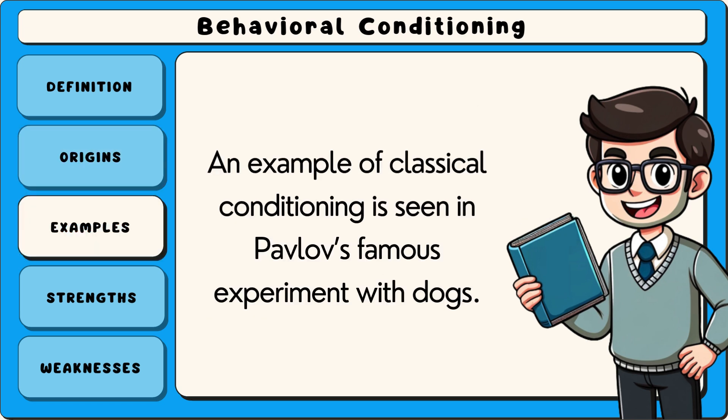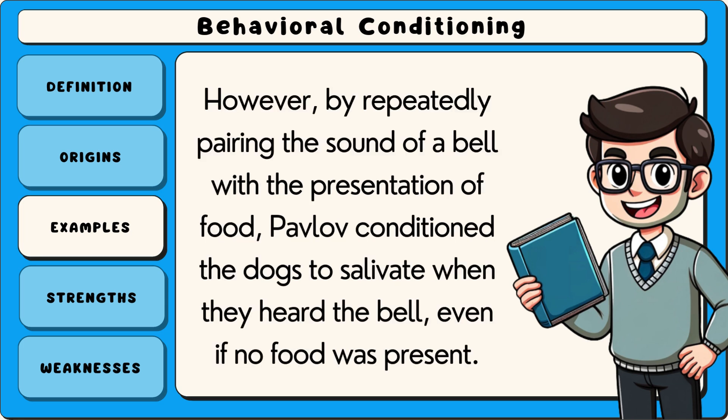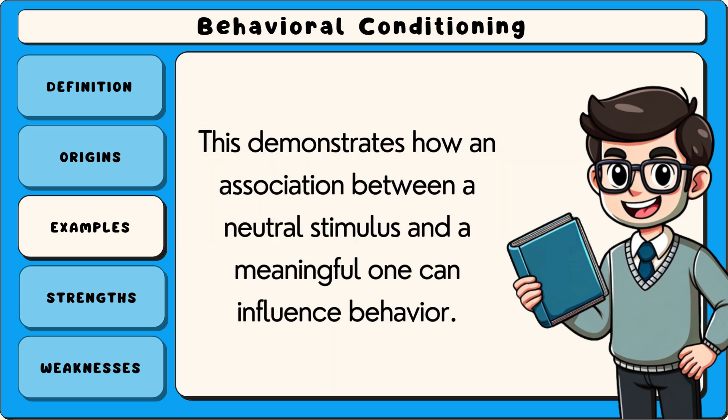An example of classical conditioning is seen in Pavlov's famous experiment with dogs. Initially the dogs would salivate only when food was presented. However, by repeatedly pairing the sound of a bell with the presentation of food, Pavlov conditioned the dogs to salivate when they heard the bell, even if no food was present.